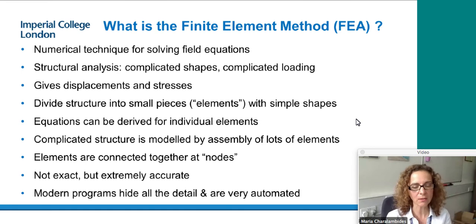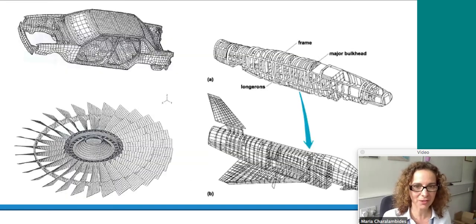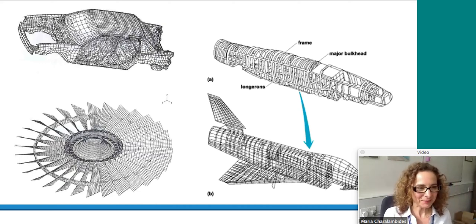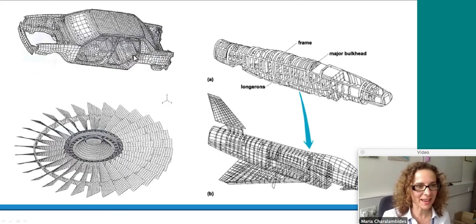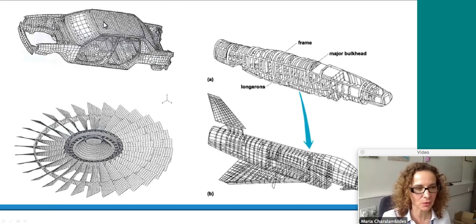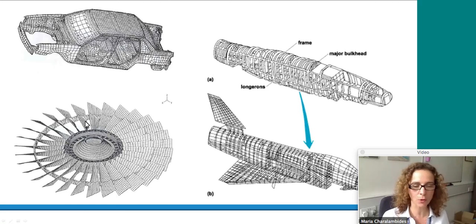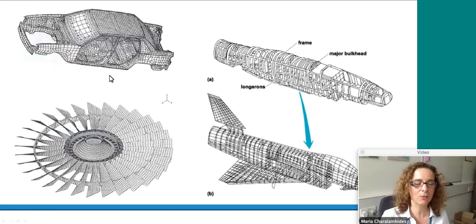Modern programs hide all this detail and are very automated. Here are examples of where the finite element method is used in engineering — for example, a car chassis divided into elements with nodes at each edge. These methods are heavily used in the automotive and aerospace industries because you cannot have mathematical equations that enable you to solve such complicated problems.